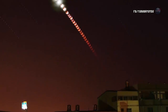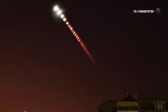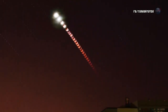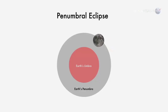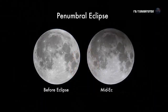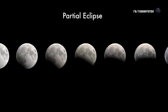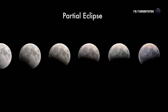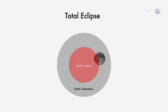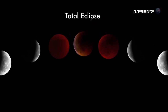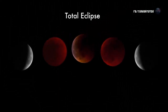On average, lunar eclipses occur about twice a year, but not all of them are total. There are three types. A penumbral eclipse is when the moon passes through the pale outskirts of Earth's shadow — it's so subtle, sky watchers often don't notice an eclipse is underway. A partial eclipse is more dramatic: the moon dips into the core of Earth's shadow, but not all the way, so only a fraction of the moon is darkened. A total eclipse, when the entire moon is shadowed, is best of all. The face of the moon turns sunset red for up to an hour or more as the eclipse slowly unfolds.